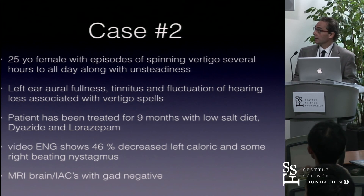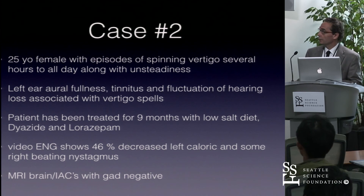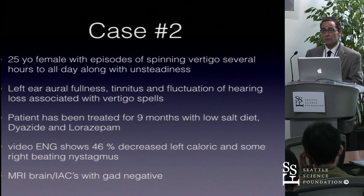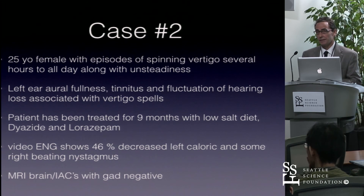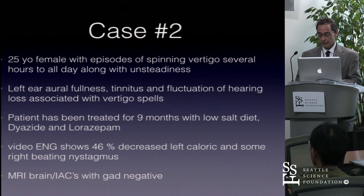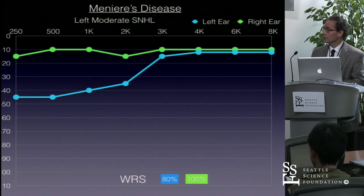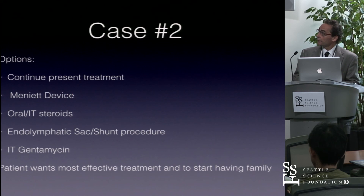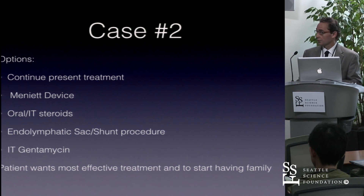Case two is a 25-year-old female with episodes of spinning vertigo lasting several hours to all day with unsteadiness. The left ear had aural fullness, tinnitus, and fluctuating hearing associated with vertigo. She had been treated for nine months with low-salt diet, Dyazide, and lorazepam. VNG showed a 46% decrease in left caloric response with some right-beating nystagmus. MRI IACs with gadolinium was negative. Audiogram demonstrated left moderate sensorineural hearing loss with an asymmetric but good word recognition score. Options included continuing present treatment, Meniett device, oral or intratympanic steroids, endolymphatic sac shunt, or intratympanic gentamicin.